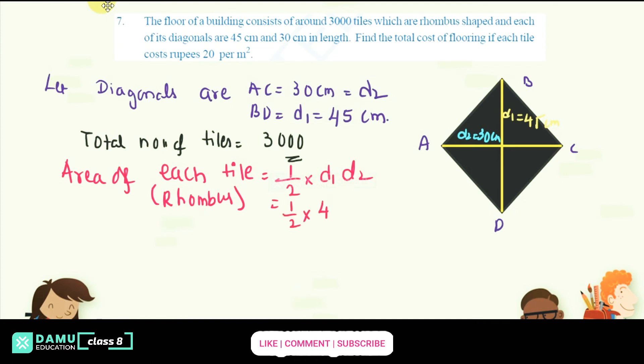So that is half into d1 (which is 45) into d2 (which is 30). Half of 30 is 15, so we get 45 into 15, which equals 675 centimeter square. That is the area of each tile.